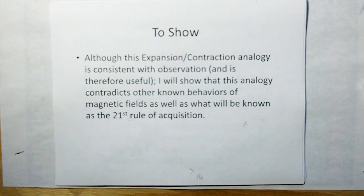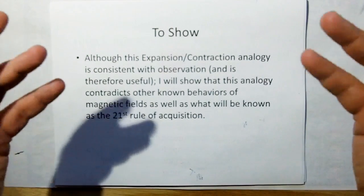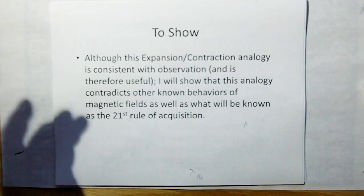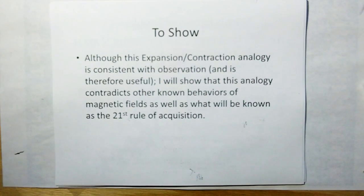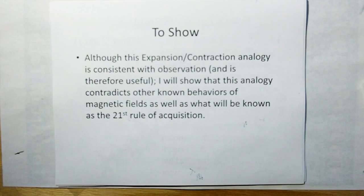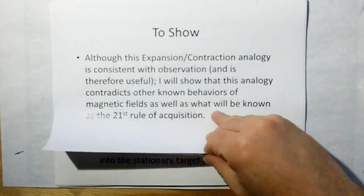Now, this expansion-contraction analogy is consistent with observation — in other words, it seems to work that way. And therefore, even if I can show you this analogy is wrong, it's still useful. What I'm going to show you is that this analogy contradicts other known behaviors of magnetic fields, as well as what will become to be known as the 21st Rule of Acquisition, which is essentially this presentation.